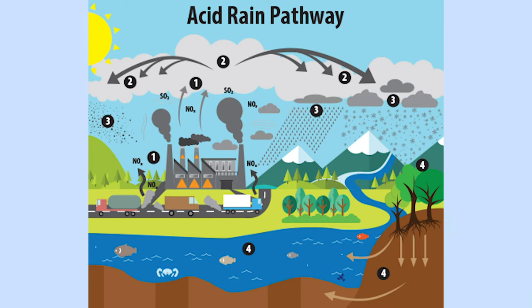We know from the water cycle that water is collected by rivers, lakes, plants, and it also hits structures like our homes or buildings. When there is acid in the precipitation, the acid rain becomes harmful to the soil, forest, bodies of water, and the animals that live there.